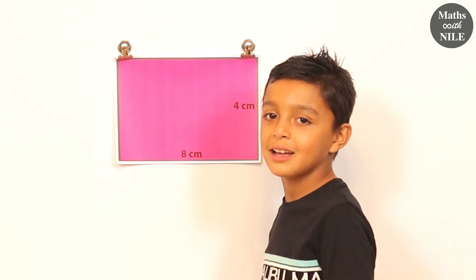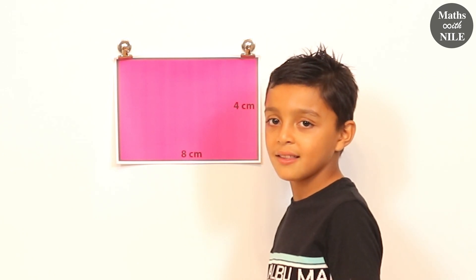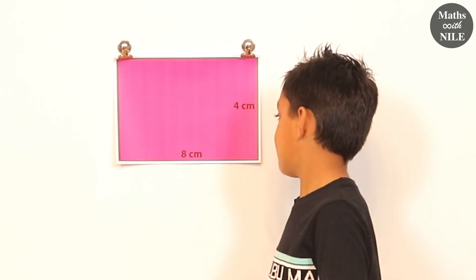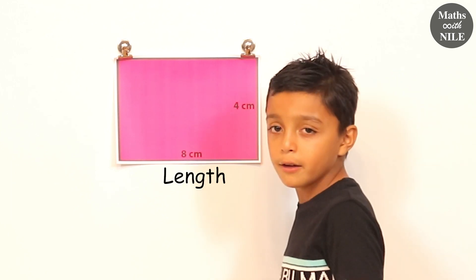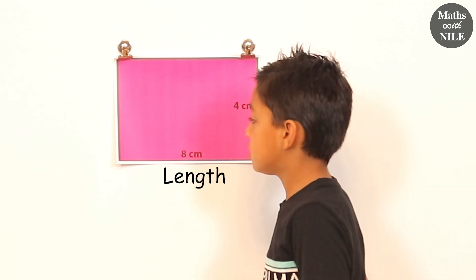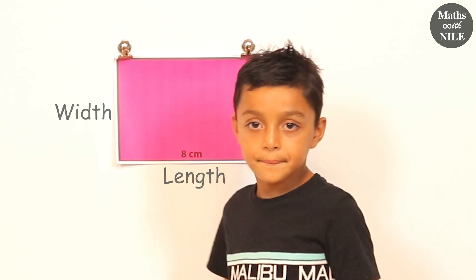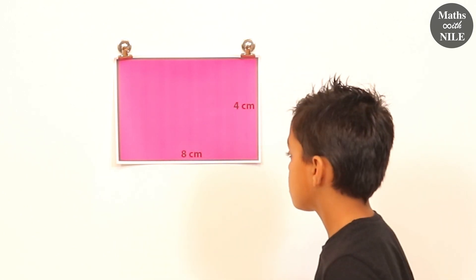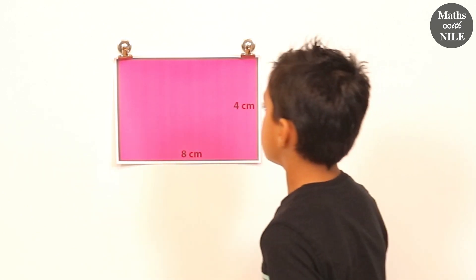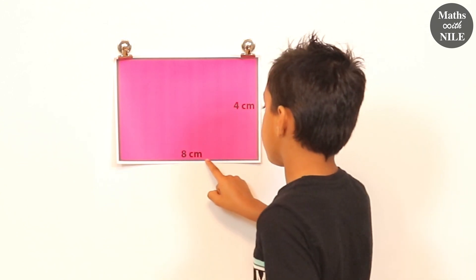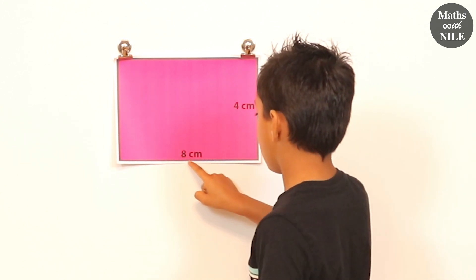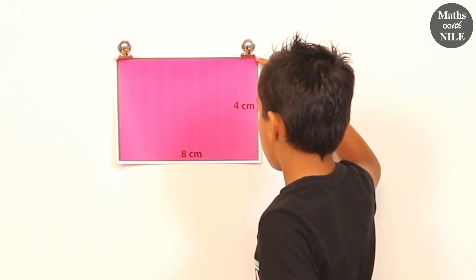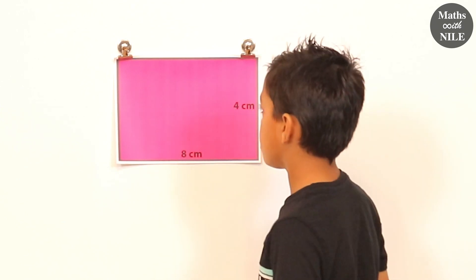So do you know what the long side of a rectangle is called? The length. And what about the short side? The width. So we're going to walk around again, but this time we're going to count as we go along the distance that we're traveling with your finger. And here's how long the width is, and here's how long the width is.